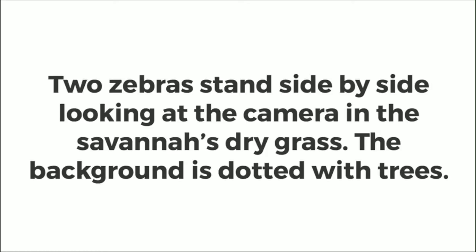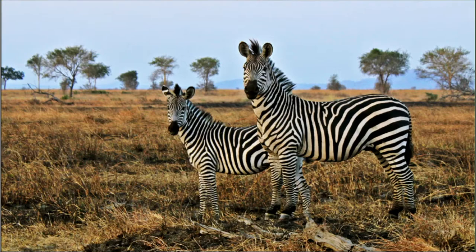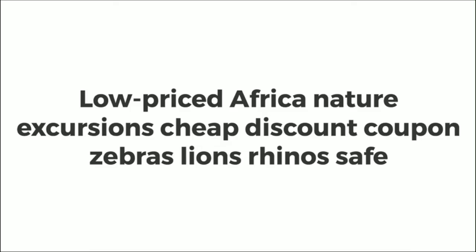Let's talk about alternative text. If you're blind and there isn't any, an image is completely meaningless to you online. But if I give you this: two zebras stand side by side, looking at the camera in the savannah's dry grass, the background is dotted with trees — you have a much better idea of what the image shows. Now if our SEO guy told us to use keyword stuffing, your zebras would look like this: low-priced African nature excursions, cheap discount coupon, zebras, lions, rhinos, safe. Let's not do that to people.